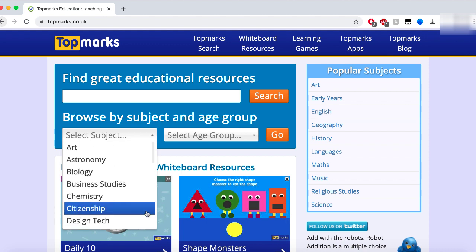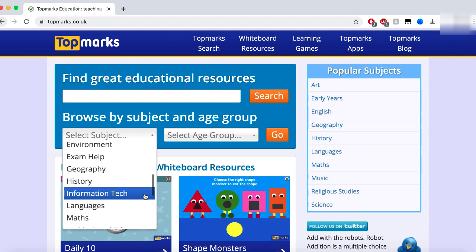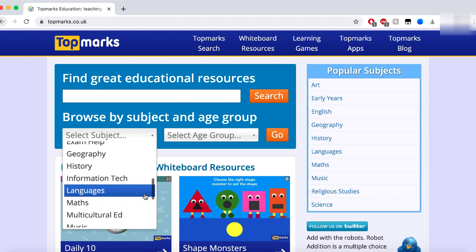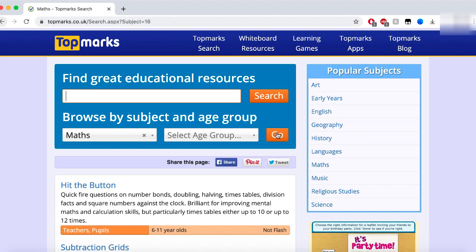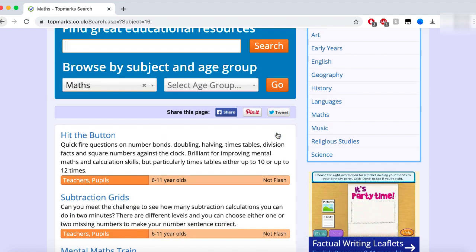So just as a little example here I'm going to jump into the math section. I'm not going to set an age group at this moment in time, I'm just going to hit go. It's not a necessity to select one, you can search without it. The first result that comes up, one of the more popular activities on this website, is Hit the Button.